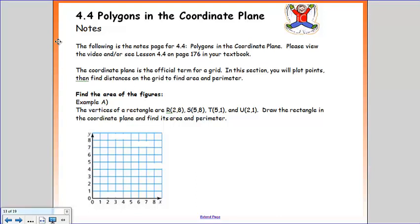Hello and welcome to the final section in this chapter. This is 4.4 polygons in the coordinate plane. We're going to look at our second paragraph. The coordinate plane is the official term for a grid. In this section you will plot points, then find distances on the grid to find its area and perimeter.